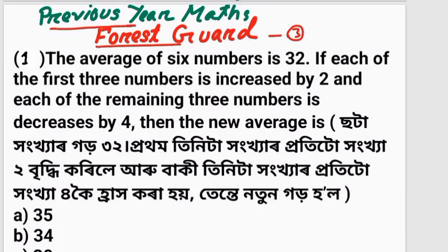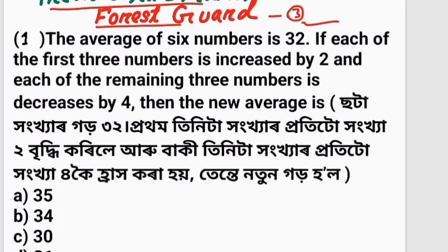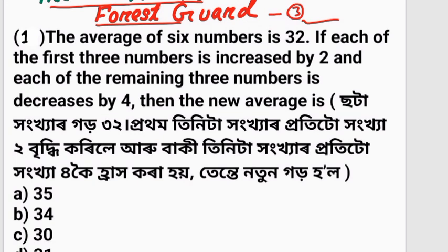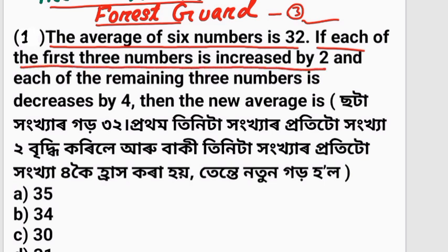Paper number 3. First question: The average of 6 numbers is 32. If each of the first 3 numbers is increased by 2, and each of the remaining 3 numbers is decreased by 4, then the new average is what?